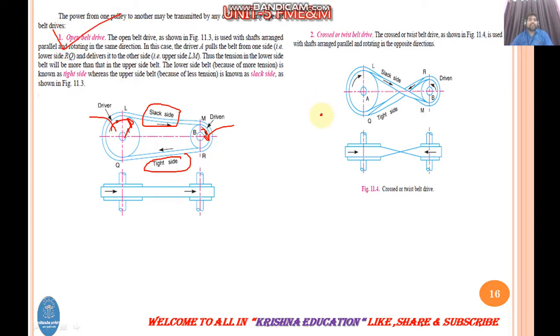But when we need to change the direction of driver and driven, we cross the belt and attach it. We fit it cross like this. This is cross belt drive, where the direction of driver and driven changes. Like if driver runs clockwise, then driven runs anti-clockwise.